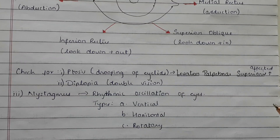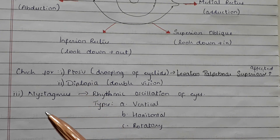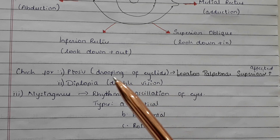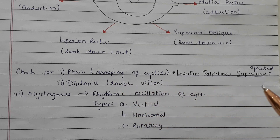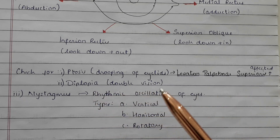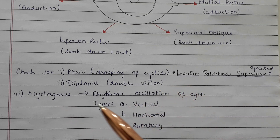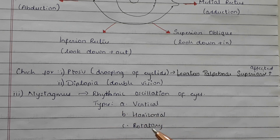While performing these eye movements, you need to check for ptosis, diplopia, and nystagmus. Ptosis is drooping of eyelids — if seen, it means the levator palpebrae superioris muscle is affected. Diplopia means double vision; ask the patient if the double vision is present in one or both the eyes. Nystagmus is rhythmic oscillation of the eyes, and its types include vertical, horizontal, and rotatory.